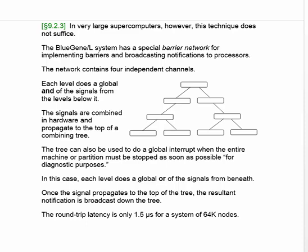Each level does a global AND of the signals from the level immediately below it. This global AND is done with combinational logic so that signals propagate virtually instantaneously to the top of the combining tree. When the global AND becomes 1, that tells you that all the nodes below have reached the barrier.